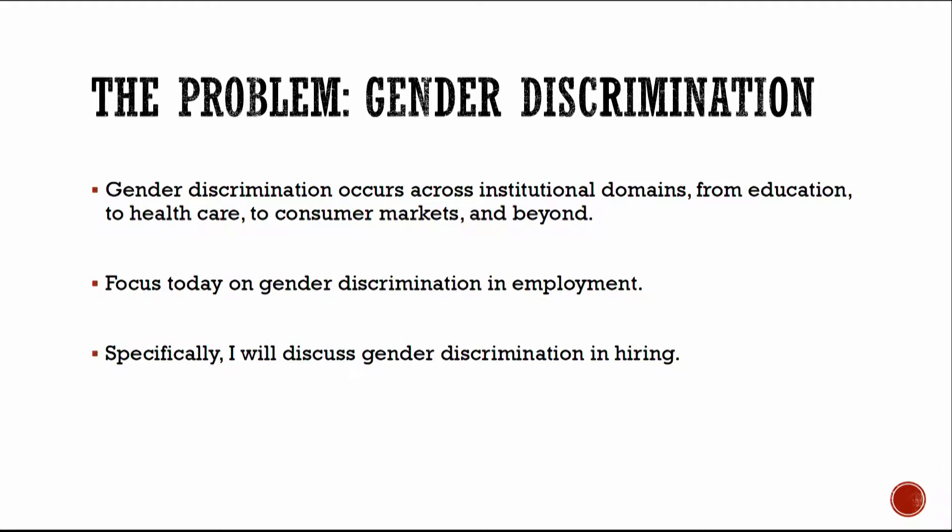When we think about discrimination by gender, we know that it occurs across different institutional domains — in education, in the health care system, in consumer markets, as well as other institutional contexts. Today, I'm going to focus specifically on gender discrimination in employment, because work is a key institution that helps keep people out of poverty, and it's through work that we often see gender inequality in earnings emerge. Specifically, I'm going to focus on gender discrimination in hiring, because hiring is an early and key step in the employment process, and as social scientists, we've developed strong methods to identify discrimination at the hiring interface.